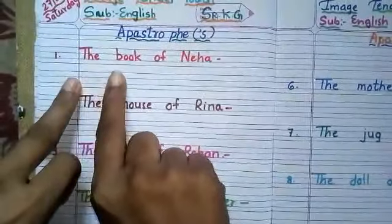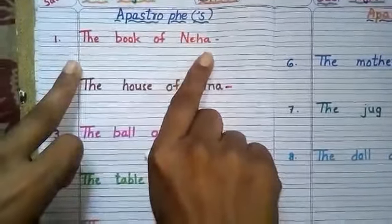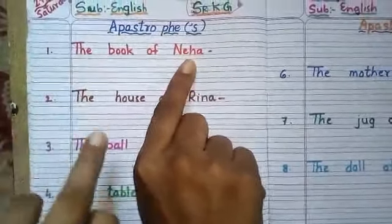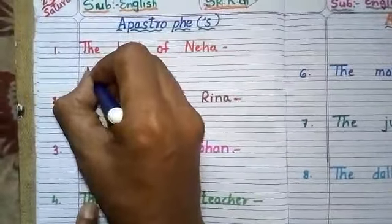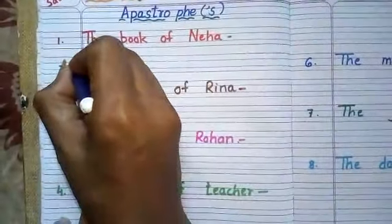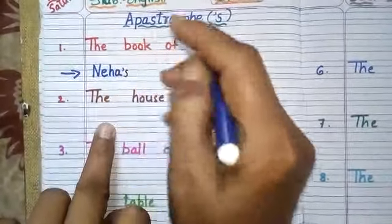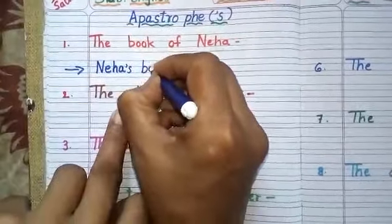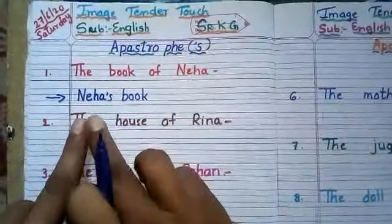Here, we will write first name. Then, we will put apostrophe S. Now, I will write this way: Neha's book.